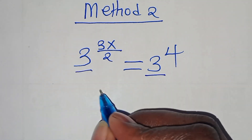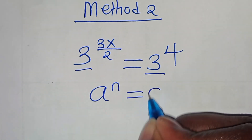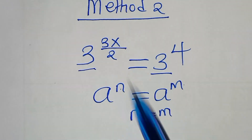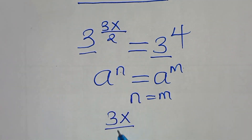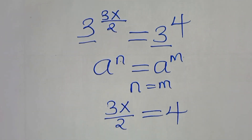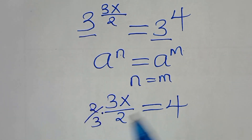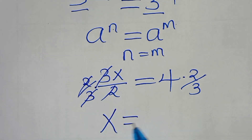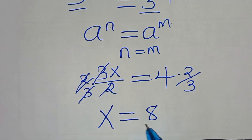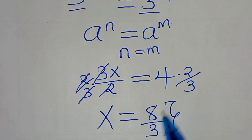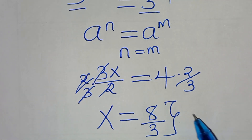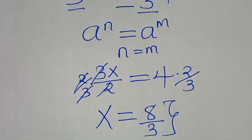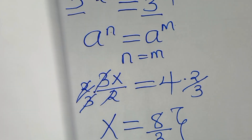Since the bases are common — a to the power of n equals a to the power of m implies n equals m — we have 3x over 2 equals 4. Multiplying both sides by 2 over 3, we get x equals 4 times 2 over 3, which is 8 over 3. This is the value of x by applying Method 2. Both Method 1 and Method 2 give us the same value of x, which is 8 over 3.